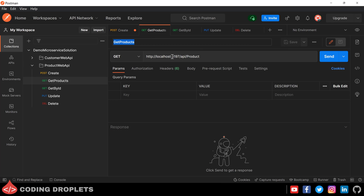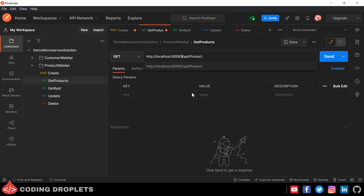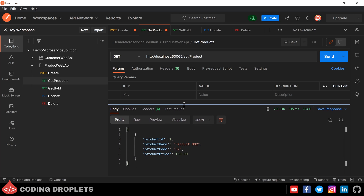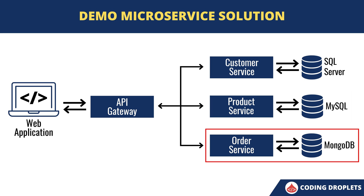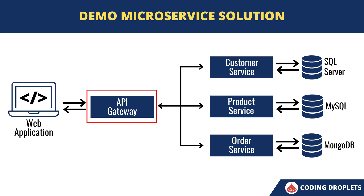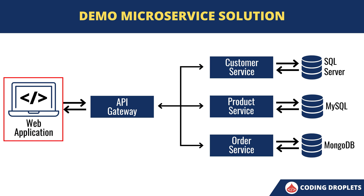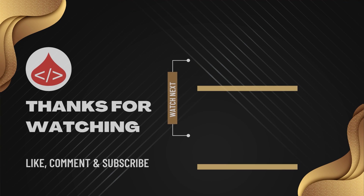Testing the GET products API method by changing the port number also works fine. So now we have created our second microservice. We'll be creating one more microservice with a MongoDB database in the upcoming video, after which we'll create an API gateway to communicate with all microservices, and finally a web application that performs CRUD operations. That's it for this video — hope you liked it. Please subscribe, like and share. See you in the next video, thank you.